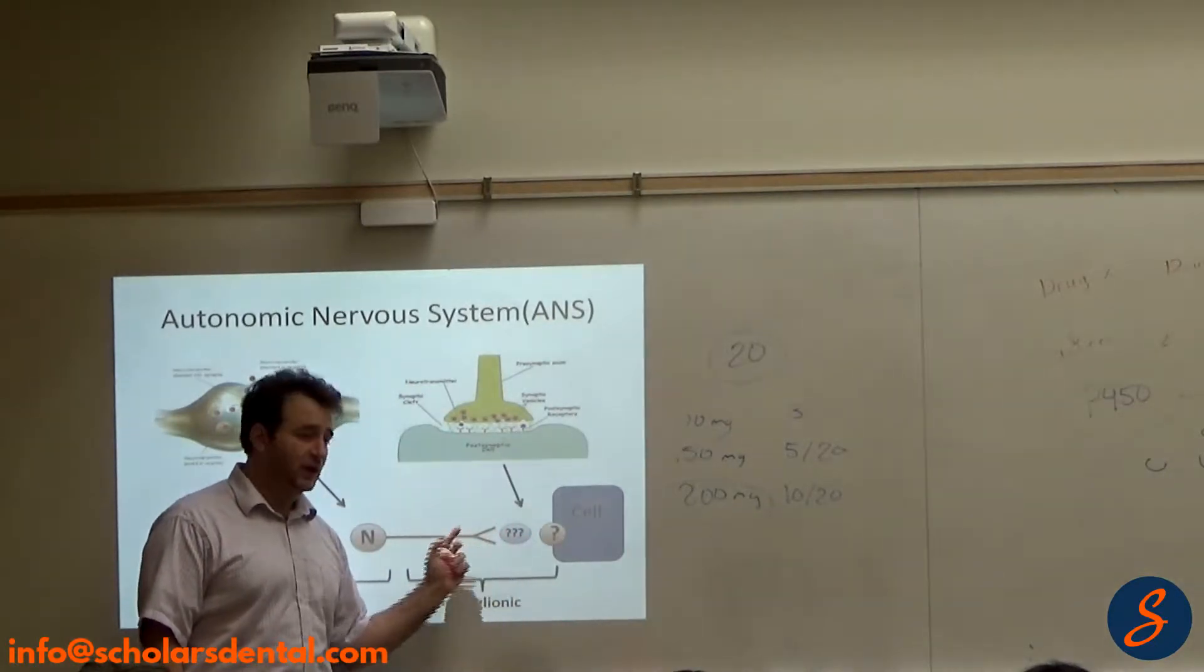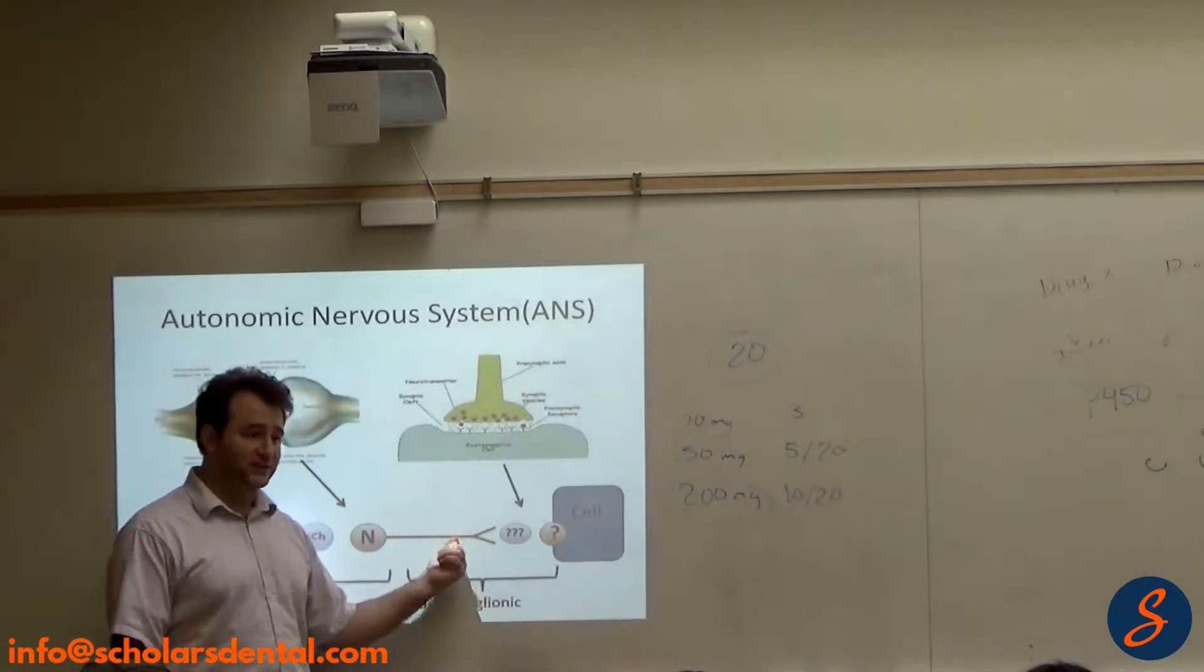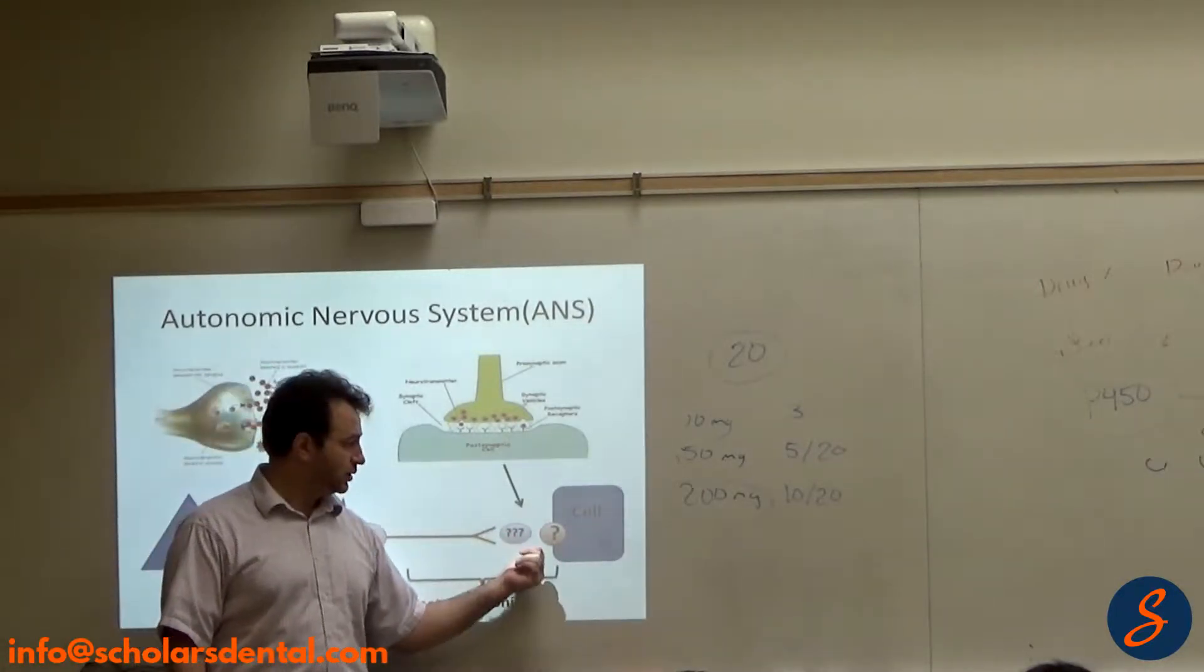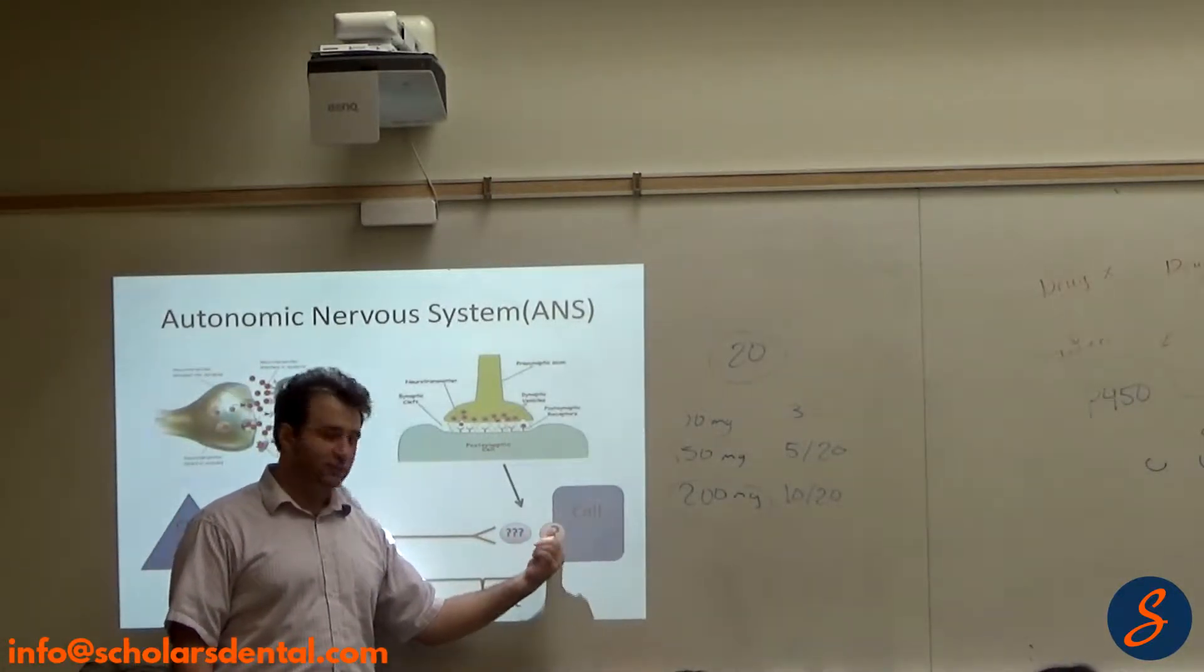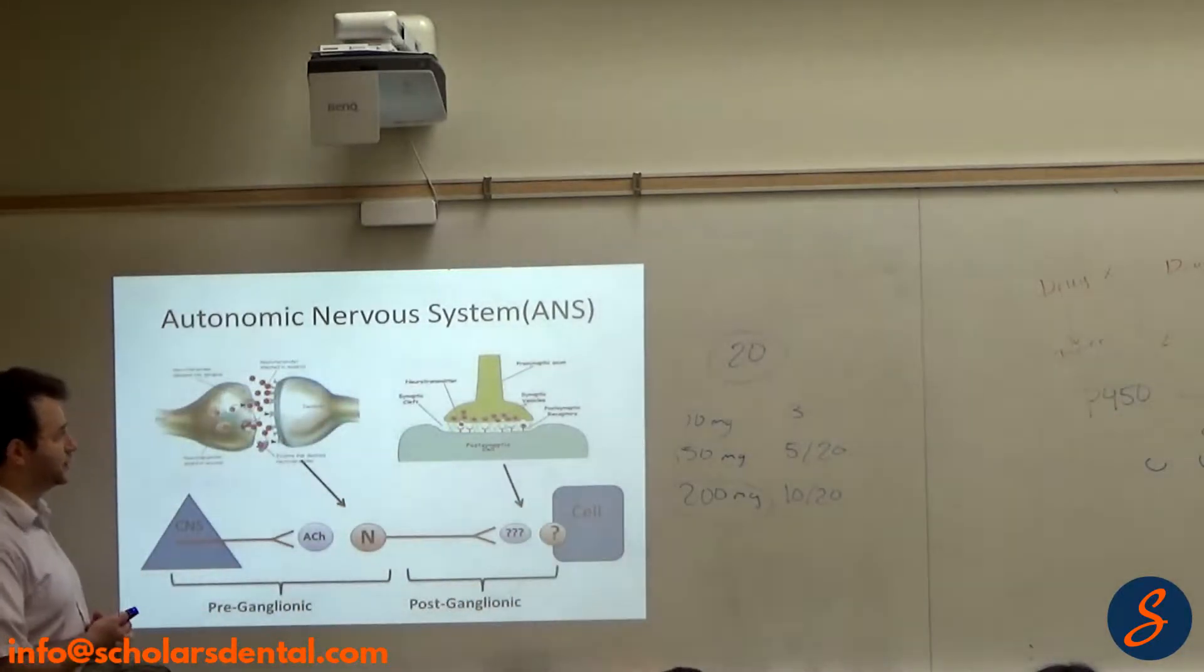Depending on the type of fiber—if it's parasympathetic, it's going to release acetylcholine. If it's sympathetic, it's going to release norepinephrine. Depending on that, you have a bunch of receptors on the cell to receive the certain neurotransmitter.